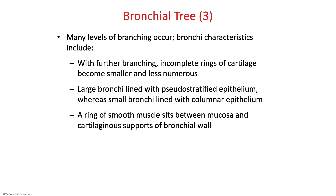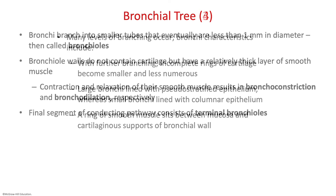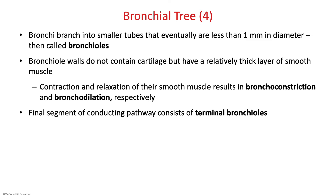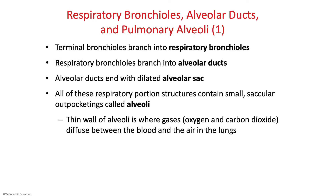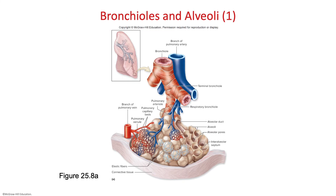In the bronchial tree, many levels of branching occur. The bronchi branch into smaller and smaller tubes and eventually into bronchioles, which can be controlled by your nervous system. Terminal bronchioles branch into respiratory bronchioles, which eventually end in alveolar ducts and alveolar sacs. All of these outpocketings are called alveoli. The wall of the alveoli is where gases — oxygen and carbon dioxide — diffuse between the blood and the air in the lungs, with pulmonary artery and pulmonary vein branches bringing blood to the alveoli.